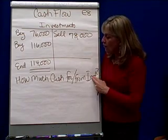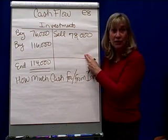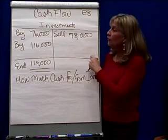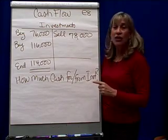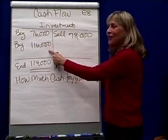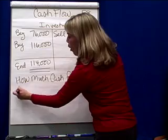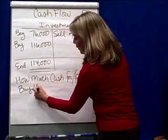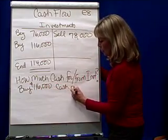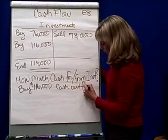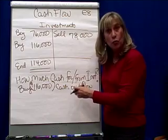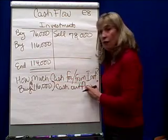The question is, looking at this activity in this account, how much cash did we get or did we spend for investments? It's pretty easy to figure out how much cash we spent for investments, because it's always what you buy. So if I bought investments of $116,000, that means that's the cash that's going to go out — the cash outflow — and so that would be deducted when I do my statement of cash flows. Cash outflow: subtract.